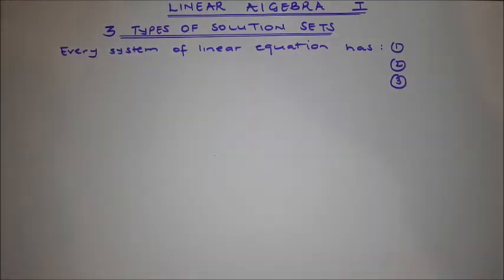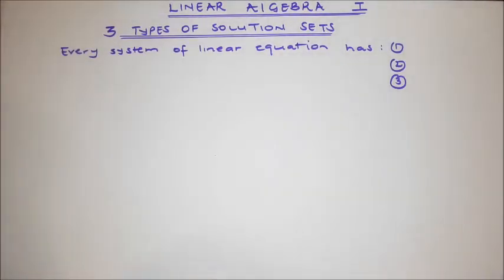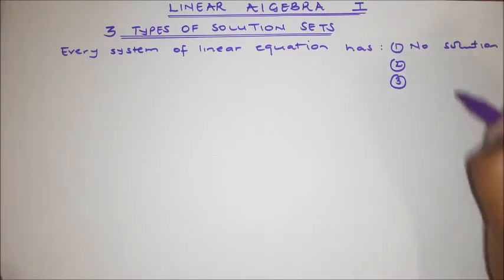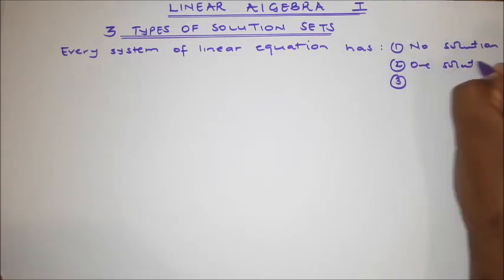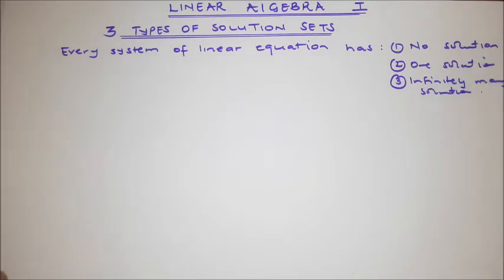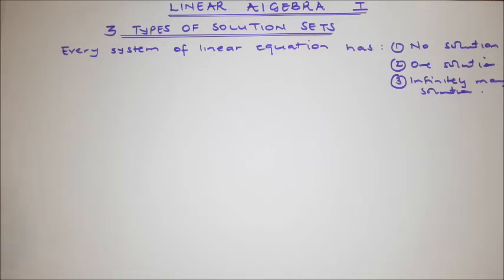Hello, hello everyone. Welcome to Academy Coordinates. In this video we are looking at the subject or the module of linear algebra. Specifically we are looking at three types of solution sets for systems of linear equations. We know that every system of linear equations has got either no solution, or one unique solution, or infinitely many solutions.